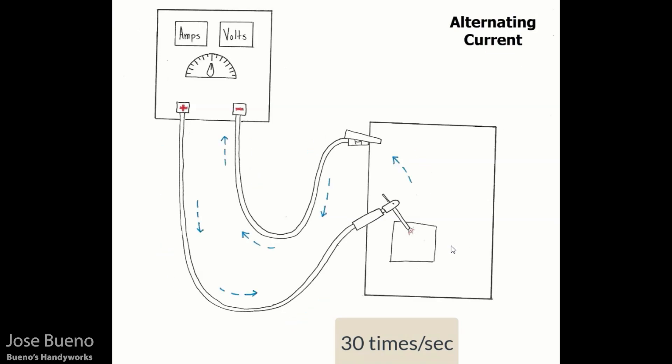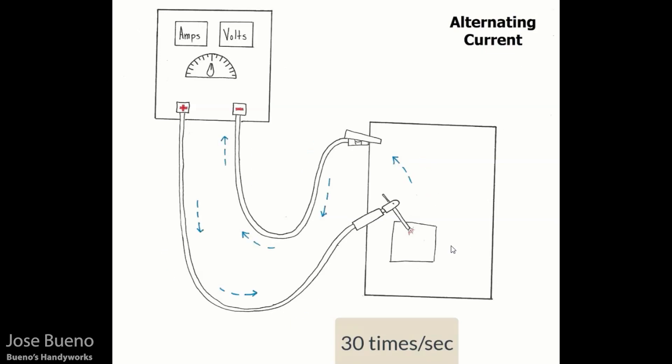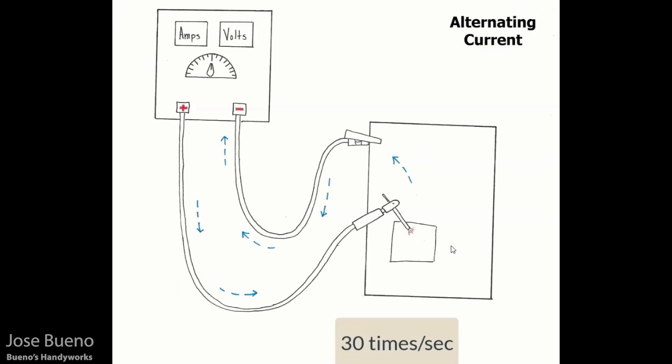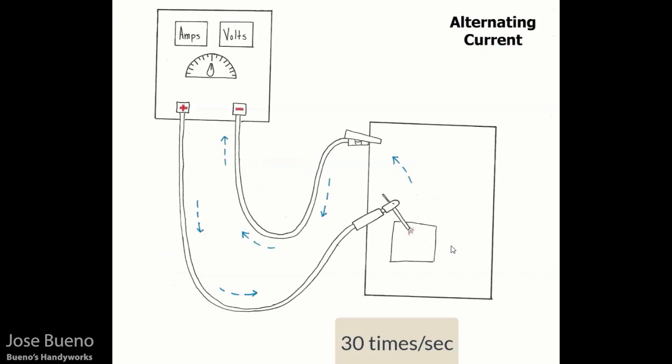Quick final summary: with alternating current, current flows in both directions but must stop before changing direction. It changes direction 120 times per second, consisting of 60 cycles per second, where one cycle is the current flowing one way, stopping, then traveling the other way. Heat distribution is 50/50. That's all you need to know until you're actually welding with AC. Thanks for watching.